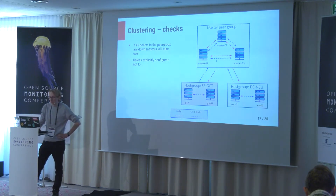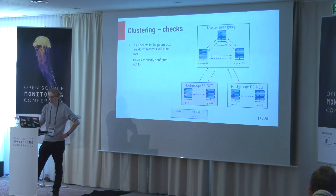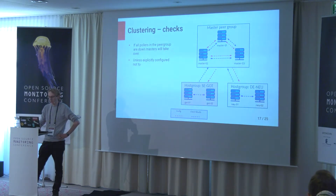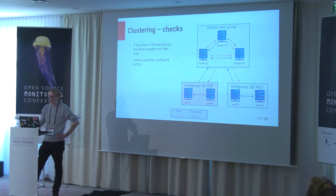To summarize the example topology: we have three masters that are peers to each other, two poller groups with the pollers peered within each group, and each poller group has multiple masters. The masters have three peers each and four pollers in total organized into two groups.